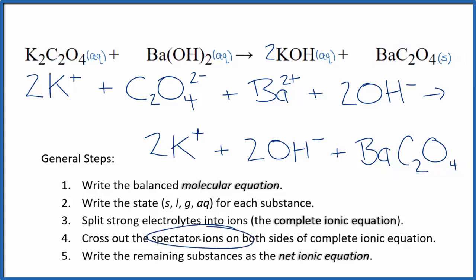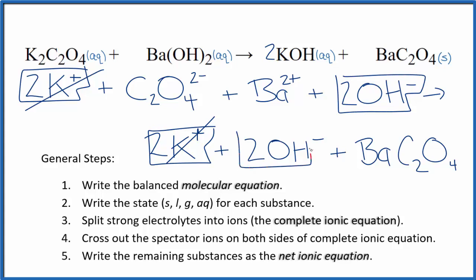So we can cross out our spectator ions now. In the reactants, I have two potassium ions. I also have that in the products. Those are spectator ions. We'll cross those out. And two hydroxide ions here in the reactants, and again in the products, spectator ions. We cross them out.